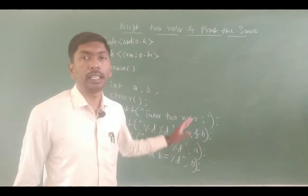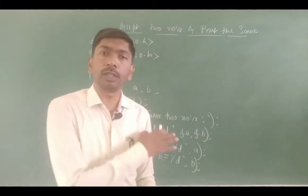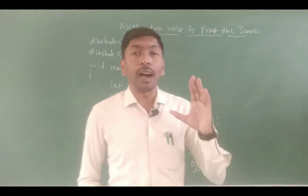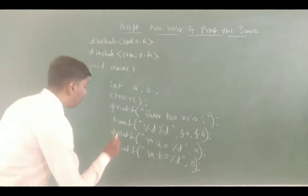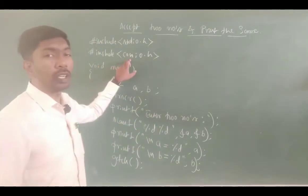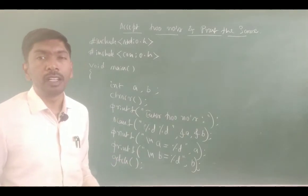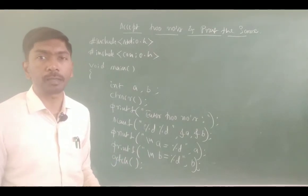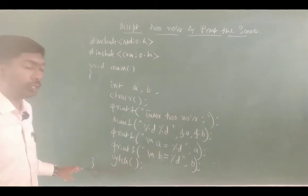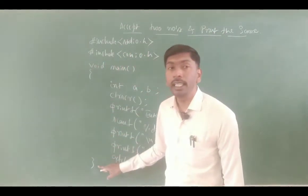Now the a value is printed. We have to stop the screen — use getch(), a built-in function that takes input and holds the output screen. After that, close the flower brace. Every opened flower brace must have a closing flower brace. This is the simple program.